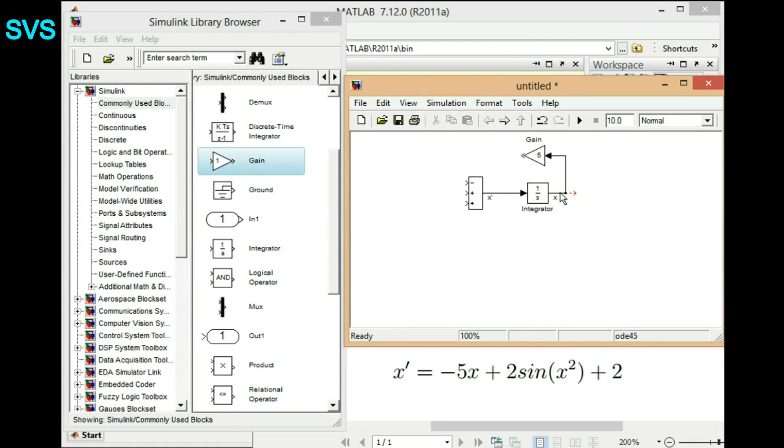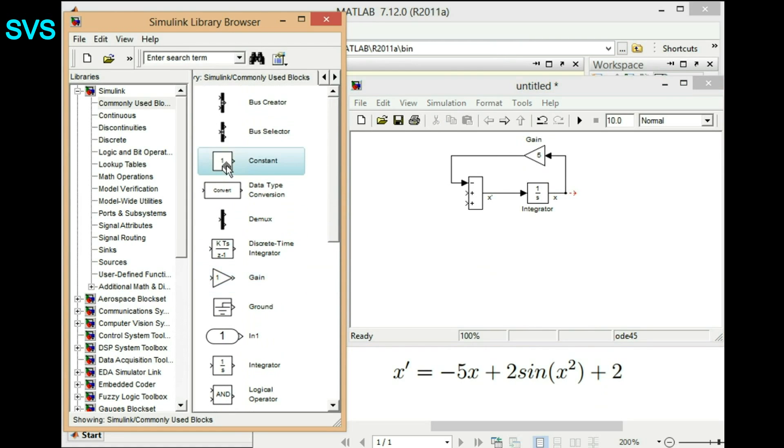We'll drag and then drop that and we'll connect it to minus. And then we'll go for the next attribute or the next part, that is 2. We'll be choosing a constant block and then connecting it to the plus and we'll assign it the value 2.